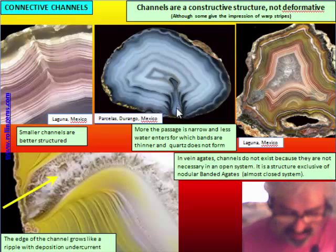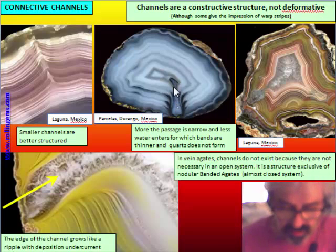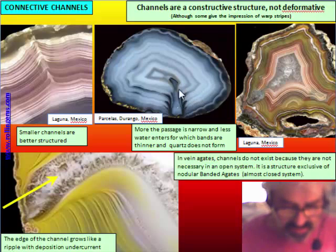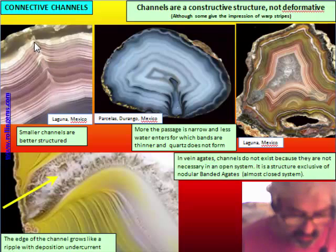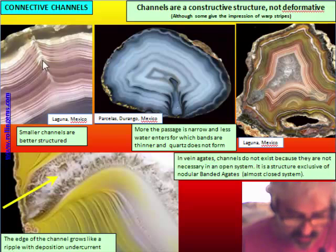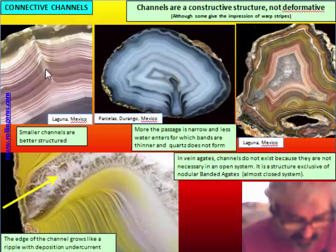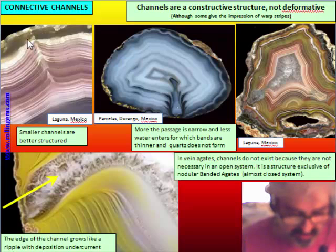It is less necessary to have a channel that helps water enter inside. When the channel is very, very small, it is better structured. The band has a more complex structure around the flow of the water input and can remain like a very small tube. But when they are very small, they have a shorter life and can be closed very rapidly.